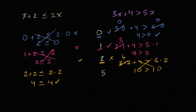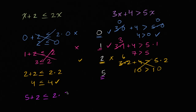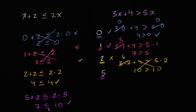Let's try out five. Five plus two needs to be less than or equal to two times five — everywhere we see an x, we replace it with five. So seven needs to be less than or equal to 10, which is absolutely true. Seven is less than 10, so it satisfies less than or equal to. So five satisfies this inequality.